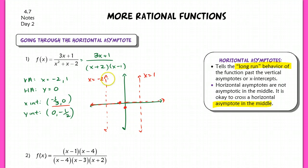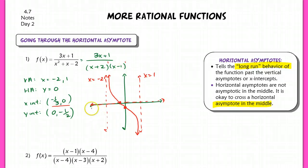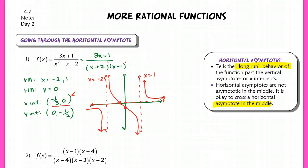As the graph approaches the vertical asymptote at negative 2, it looks like this — that's how it goes through the horizontal asymptote. These are very similar to what we saw yesterday. Both asymptotes are odd multiplicities, so the graph jumps to the opposite side of the horizontal asymptote. So these would be the other two branches of the curve. It's an obvious crossing because the x-intercept is at negative 1/3, 0.